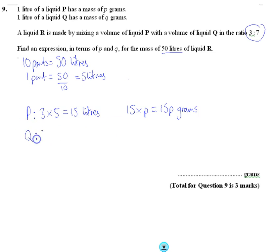For Q, we'll take our 5 litres part, and this time it will be 7 times 5, because Q represents 7 parts. So 7 times 5 is 35 litres, and each litre Q weighs Q grams, so 35Q grams.